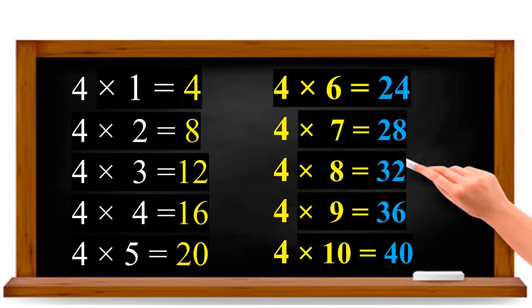Say along with me, let's sing it like a song. 4 ones are 4. 4 twos are 8. 4 threes are 12. 4 fours are 16. 4 fives are 20. 4 sixes are 24. 4 sevens are 28. 4 eights are 32. 4 nines are 36. 4 tens are 40. Are you clear with the 4 table?